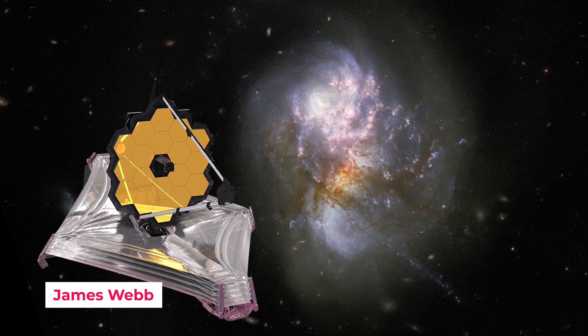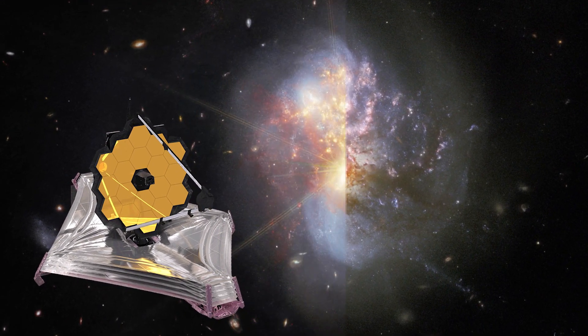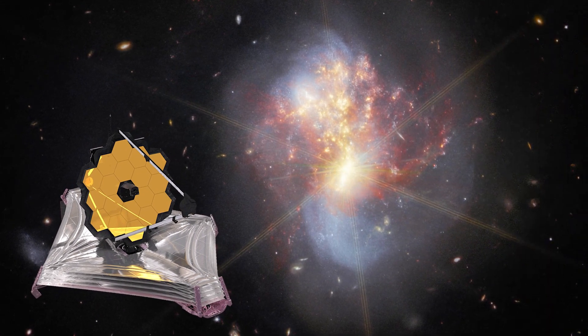However, the Webb Telescope uses infrared technology which allows it to peer through space dust, and this allowed it to discover a secret star formation just hiding behind the two galaxies colliding with each other.